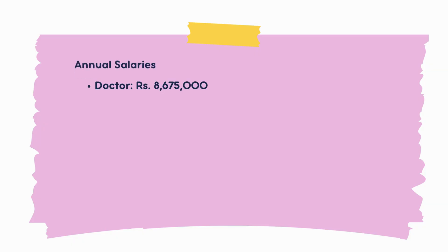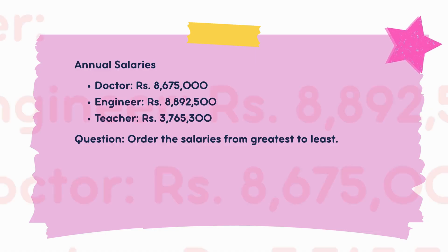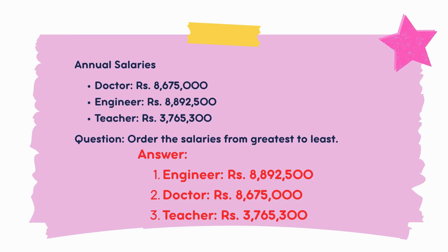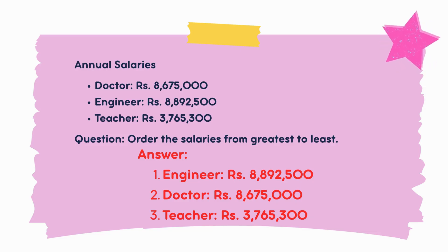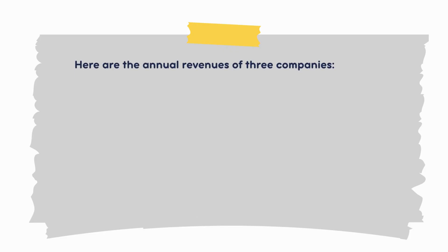Annual salaries: Doctor — 8,675,000 rupees; Engineer — 8,892,500 rupees; Teacher — 3,765,300 rupees. Question: order the salaries from greatest to least. Answer: Engineer — 8,892,500 rupees; Doctor — 8,675,000 rupees; Teacher — 3,765,300 rupees.